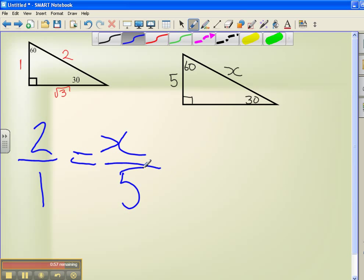So 2 equals x. 2 is the same side as x. 1 equals 5. 1 is the same length of 5. Now that we've got this, we can cross multiply to solve for x.